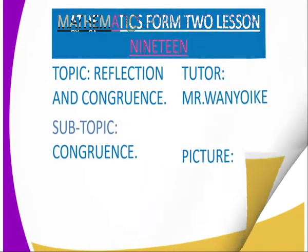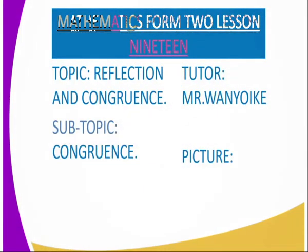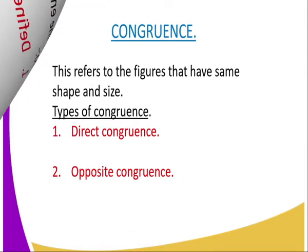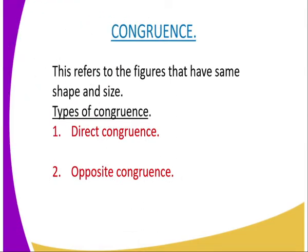What is congruence? Congruence refers to figures that have the same shape and size. As far as the types of congruence are concerned, we have two types: direct congruence and opposite or indirect congruence.